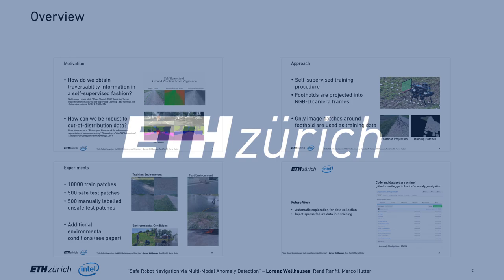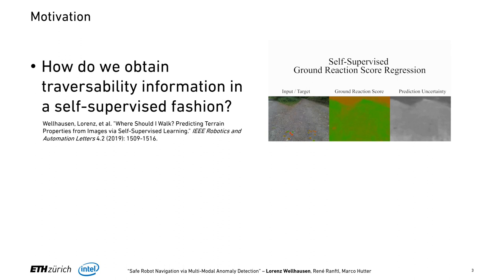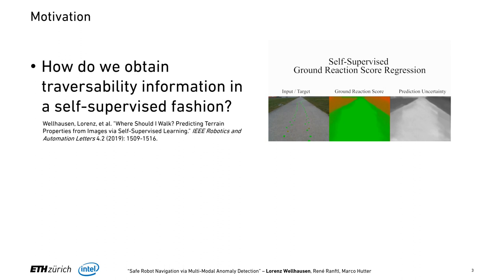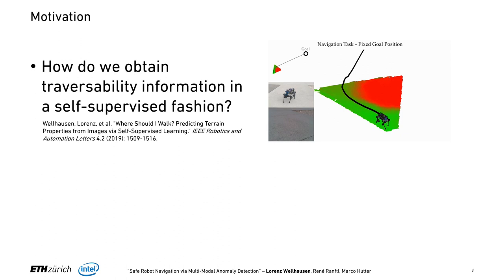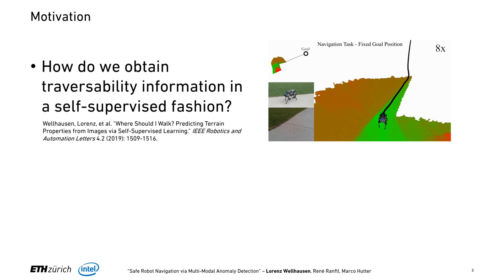The motivation comes directly from our previous work where we learned to predict terrain properties in a self-supervised fashion and then use these terrain properties to navigate in outdoor environments. The issue is how do we get information about untraversable terrain, since that's by definition very hard to get in a self-supervised fashion. So what we would like is a navigation policy that we can train with only positive labels and information about traversability, but still gives us information about untraversable terrain.